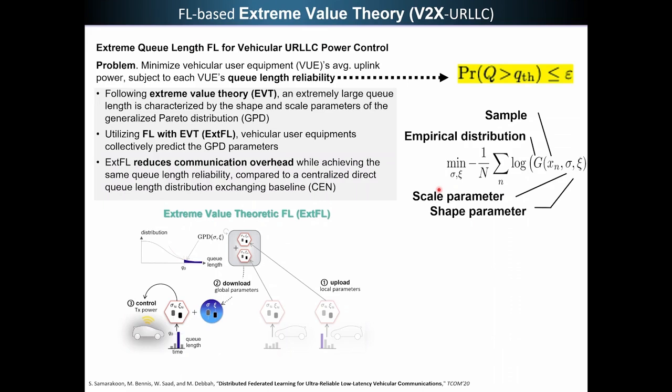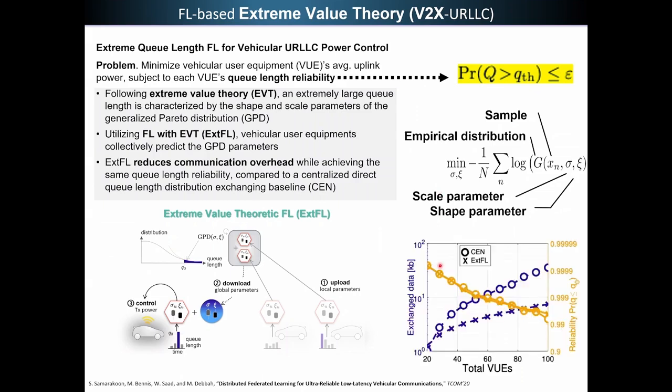So now let's look at the results here. What we plot, we plot the exchanged data between the vehicles versus the number of vehicles and the reliability measure here, because essentially we wanted to show what's the performance loss if you compare to the centralized setting. Turns out that we not only guarantee the same reliability compared with the centralized setting, but also we communicate much less data because we are communicating models, not the raw data.